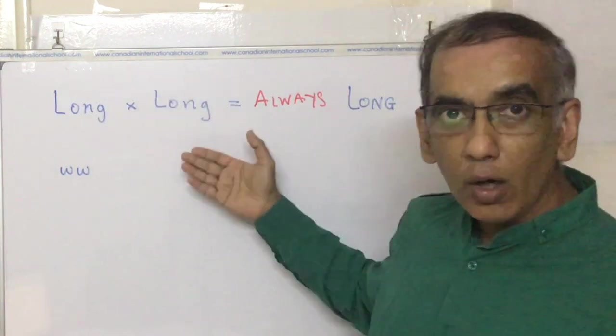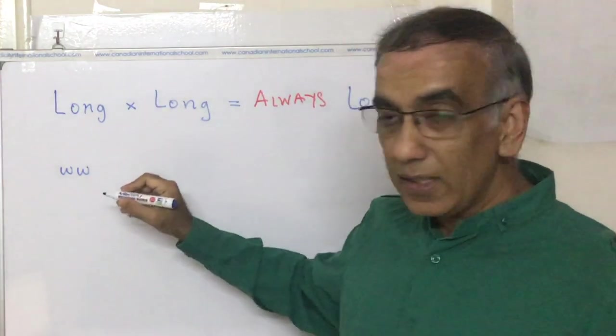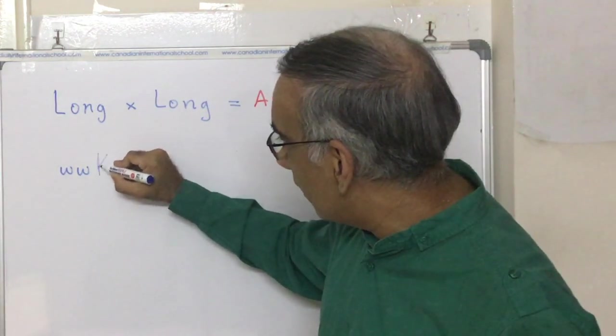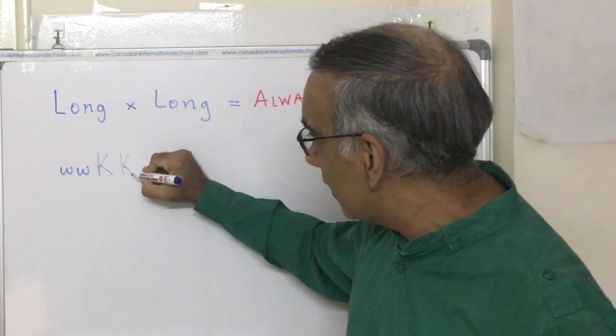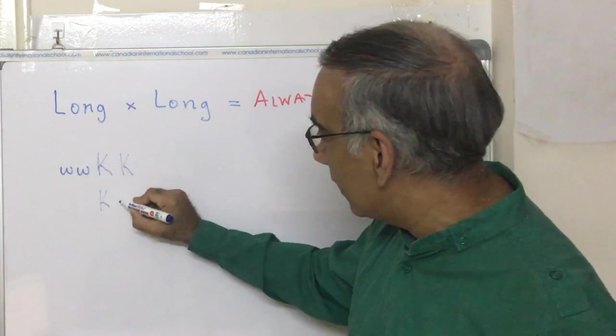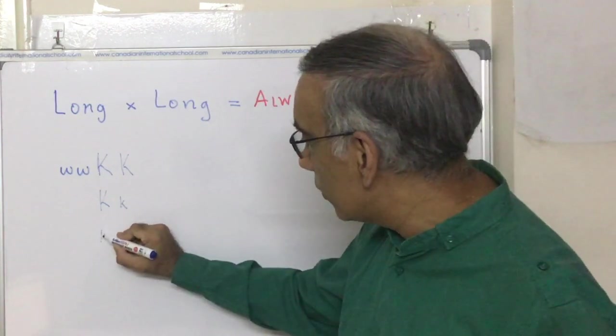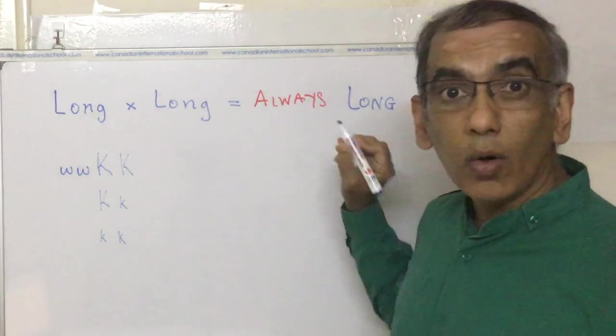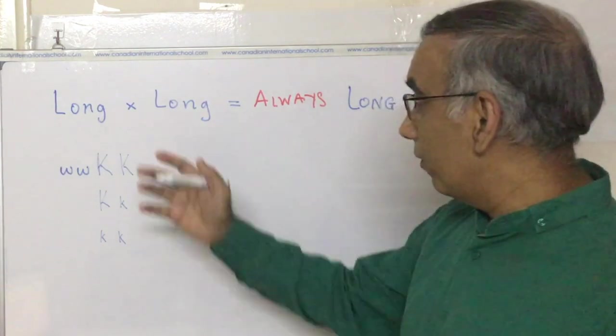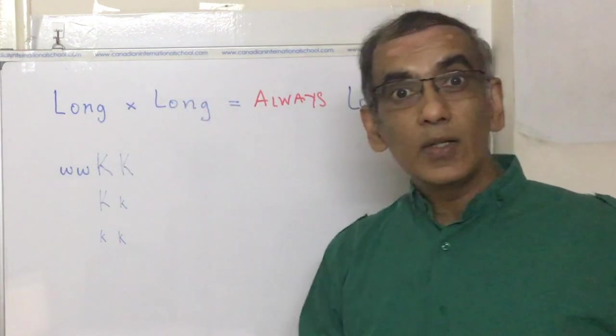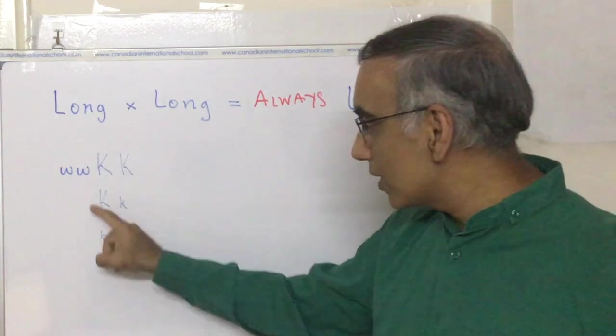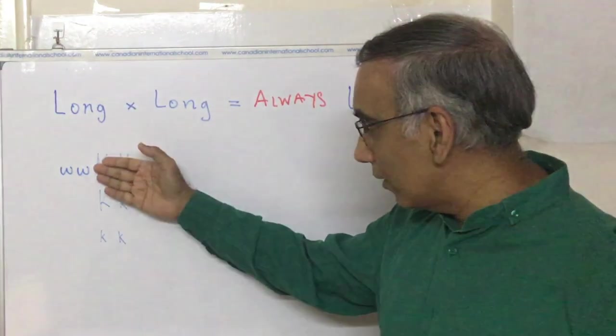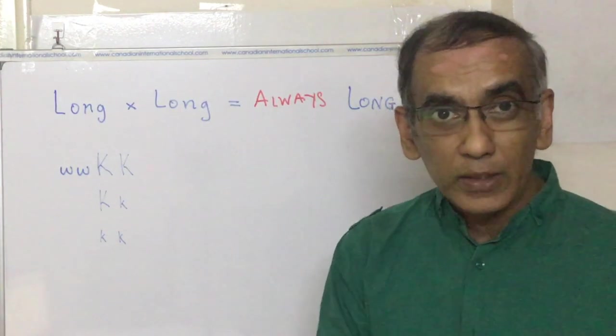But what are they going to be on the long-haired locus, designated as K? Are they going to be two big Ks, a big K and a little K, or two little Ks? Well, the key is the word always. If the offspring of a cross between long-haired dogs is always going to be long, then there are no heterozygotes in the genotype.